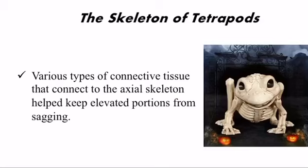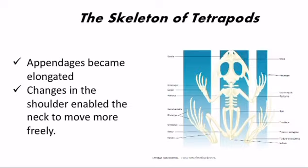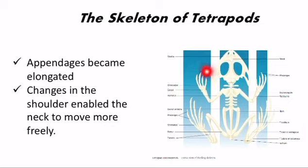Ligaments and tendons are connective tissues that connect to the axial skeleton and help keep elevated portions from sagging. Appendages became elongated and provide support on hard surfaces. Here you can see the skeleton of a frog with elongated appendages supporting on the hard surface. Changes in the shoulder enable the neck to move more freely compared to fish.